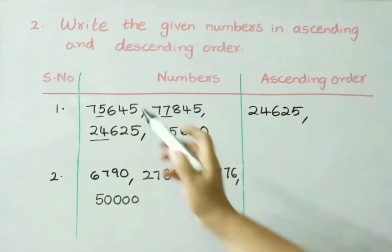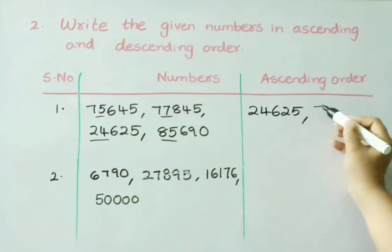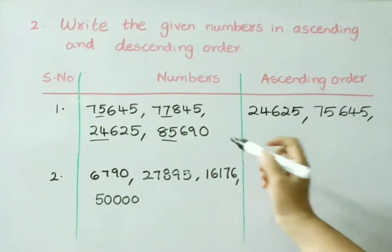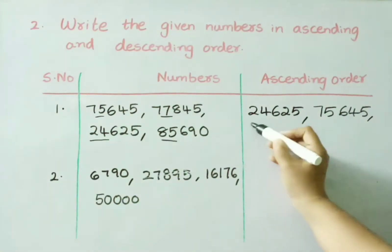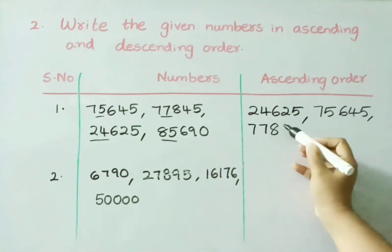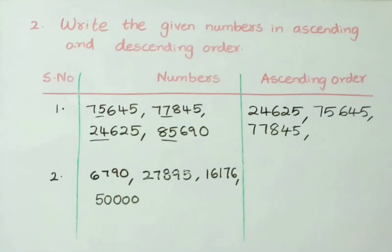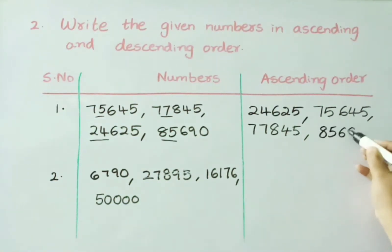See the next one: 75,000; 77,000; 85,000. Which one among these 3 is least? 75,000 value. So, write that: 75,645. Next, 2 numbers left over: 77,000 and 85,000. Which one is smallest? 77,845 is smaller than 85,000. So, 1 number left over — write that value: 85,690.